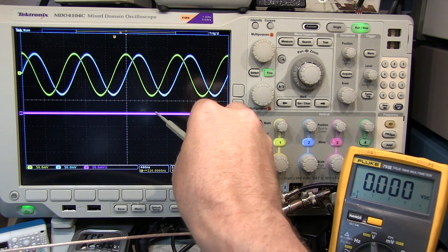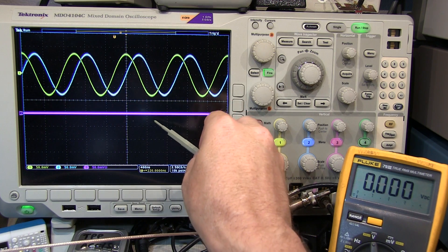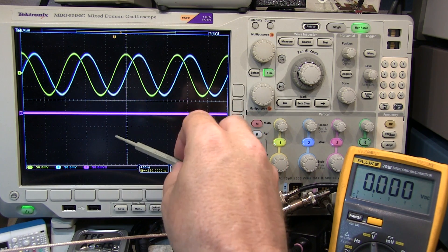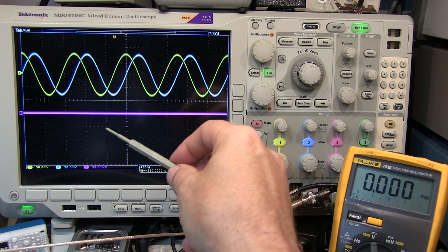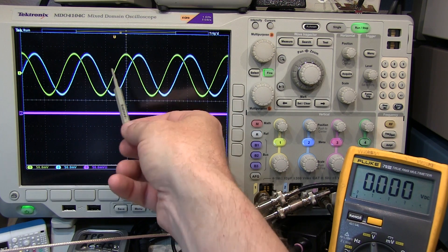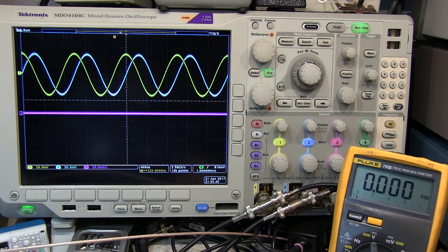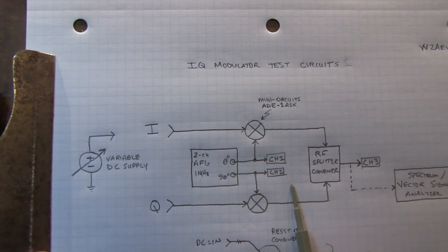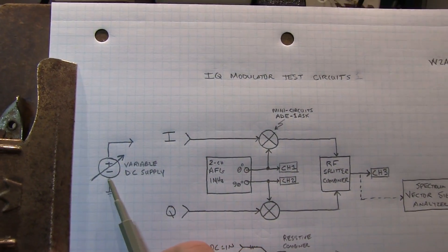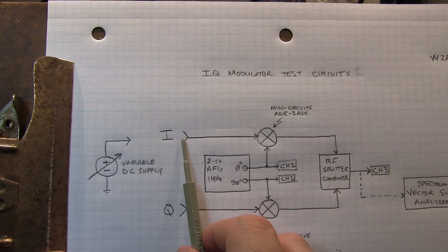Channel 3 is the output of the combiner. Now right now we've got nothing applied to the I and the Q inputs, so they're effectively zero. And again, if we think about those mixers as multipliers, zero times either one of these gives me zero, so that's why we have nothing at the output.